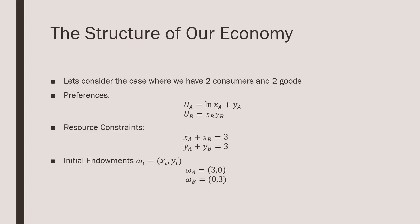So let's consider the case where we have two consumers and two goods. For consumer A, we're going to have quasi-linear preferences with ln x_A plus y_A. And for consumer B, he's going to have x_B times y_B. The size of our economy as determined by our resource constraint is that there's going to be three of good X and three of good Y. And the initial endowments is where consumer A has all of good X and consumer B has all of good Y.